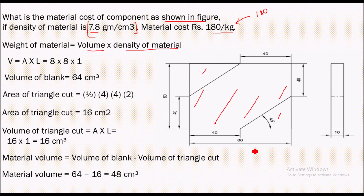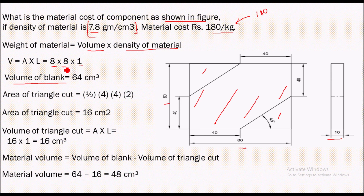We'll first calculate the total volume of this blank. Total volume equals length into breadth into height. Length is 80 mm, which is 8 centimeter; width is 80 mm, which is 8 centimeter; and thickness is 10 mm, which is 1 centimeter. On solving, we get 64 centimeter cube.